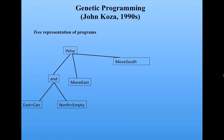Let's consider the problem of Robbie the robot again and evolving a control strategy for him. Here, instead of representing his control strategy as a string of numbers which represent actions in every possible situation, we would represent a control strategy as a sort of tree — what in computer science is called a tree, where we have the elements of the program represented in terms of nodes and branches.